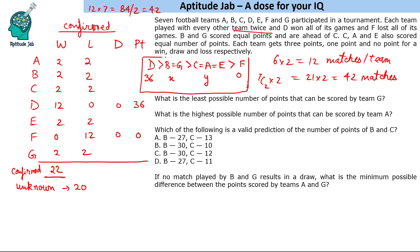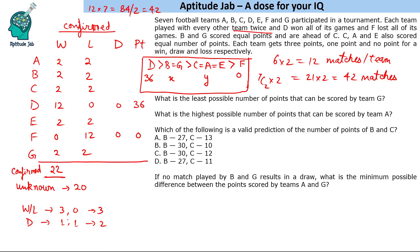We do not know the values of X and Y. For a win-loss match, 3 points are distributed. For a draw, 2 points are distributed. In the 22 confirmed matches, all result in win-loss scenarios, so there are 66 points distributed. For the 20 unknown matches, each can yield 2 or a maximum of 3 points.